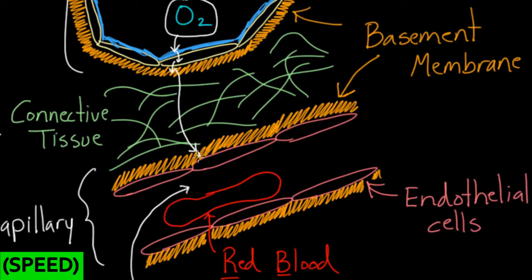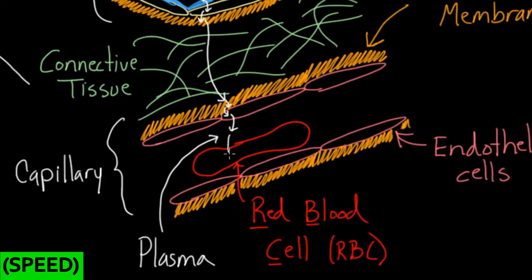It enters another layer of basement membrane, and then it goes down into the endothelial cells. These are the cells that are also pancake-shaped, and these are going to make the walls of the capillary. From there, the oxygen molecule goes into the plasma, and then finally gets into the red blood cell.